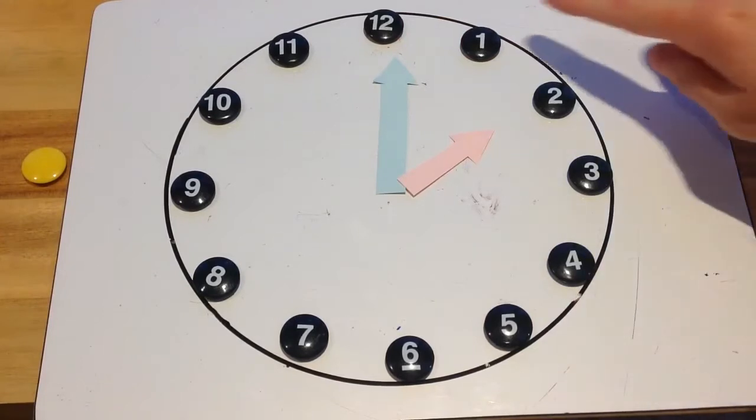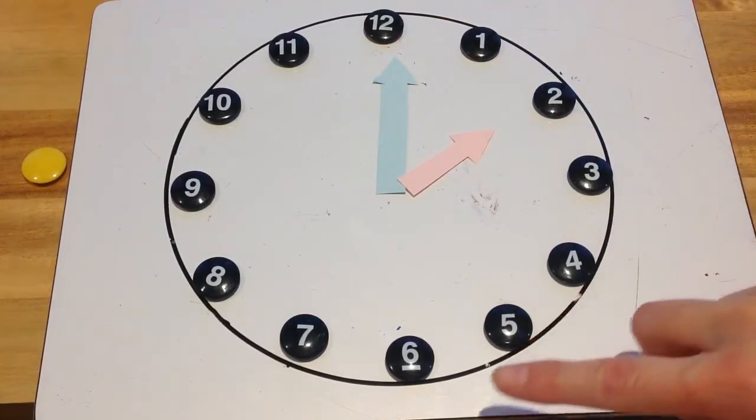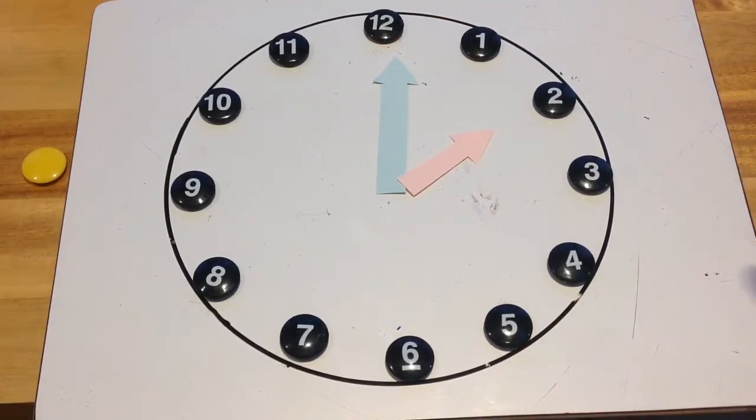It's got a round face and it's got all the numbers going along the outside from 1 to 12. And it's got two hands in the middle, one long one, one short one.